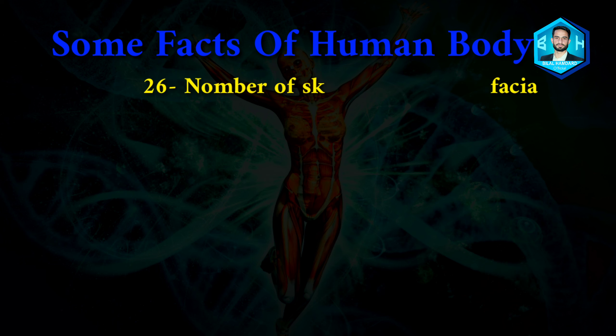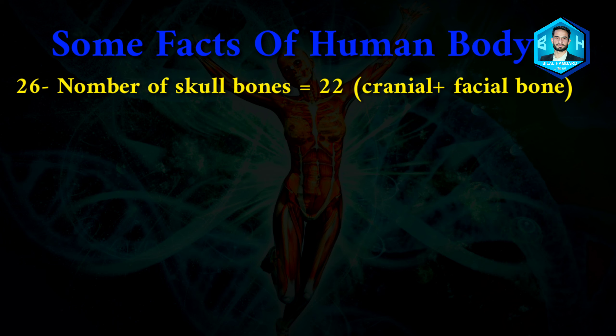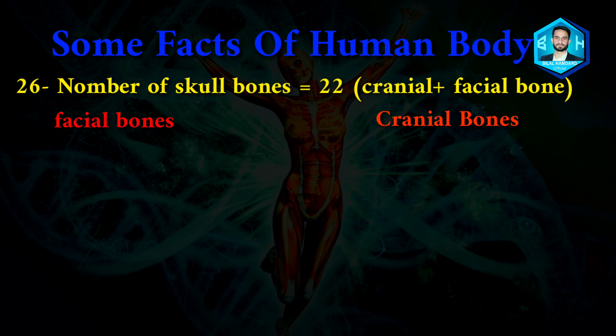Number twenty-six: number of skull bones is 22, which is divided into two groups — cranial bones (8) and facial bones (14).